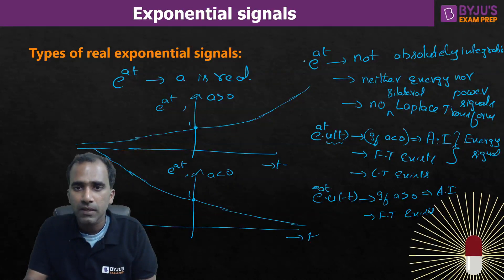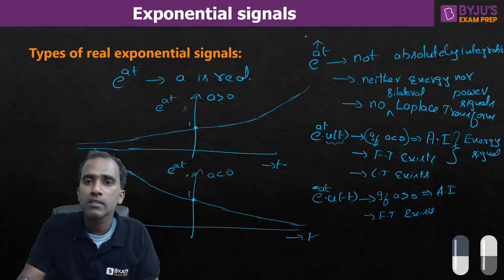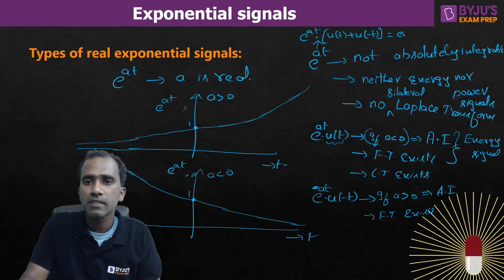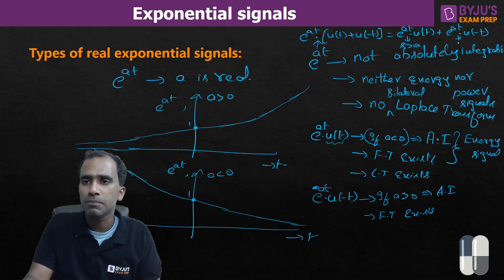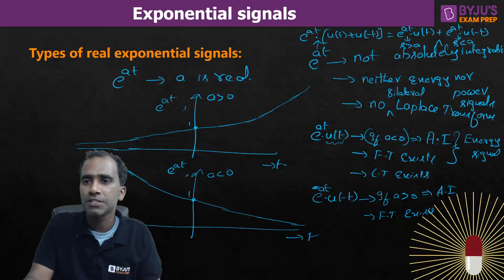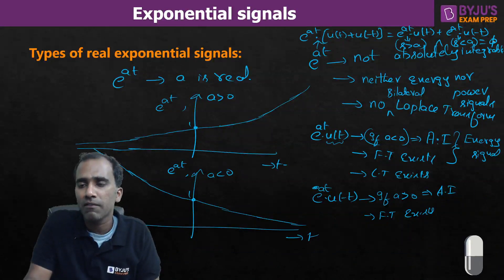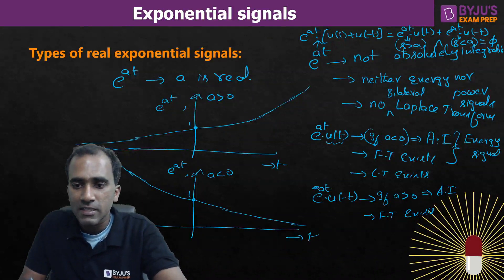For two-sided exponential signals like e^(at) — existing for all time — Laplace transform does not exist. We can write e^(at) = e^(at)·u(t) + e^(at)·u(-t). The ROC for the first part is Re(s) > a, and for the second part is Re(s) < a. The intersection of these two ROCs is null — there is no common ROC — which means no valid Laplace transform exists for two-sided exponential signals. That concludes today's session.